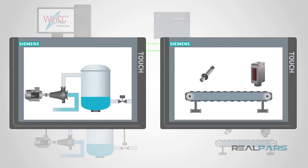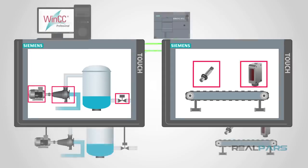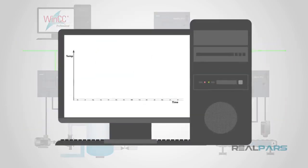Human-Machine Interface or HMI software facilitates interaction with field devices such as pumps, valves, motors, sensors, etc. Also within the SCADA software is the ability to log data for historical purposes.